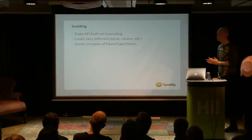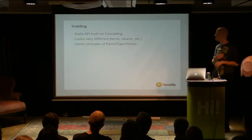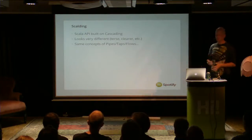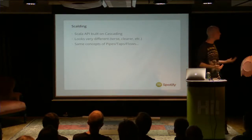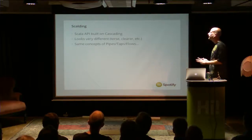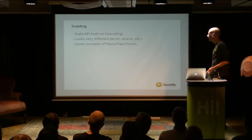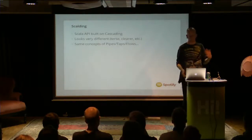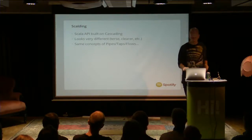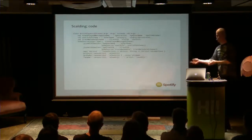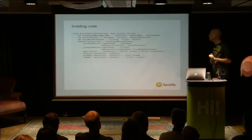As a response to some of those criticisms, Twitter came up with Scalding — a Scala API built on top of Cascading. It looks very different; it's quite a heavy abstraction on top of Cascading. It uses Cascading to do the computation but isn't really indicative of how Cascading builds its flows. It has the same concepts of pipes, taps, and flows for transforming, sourcing, and syncing data.